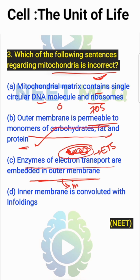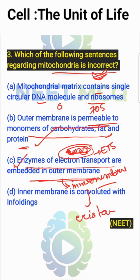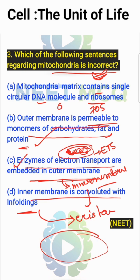The enzymes of the electron transport system of respiration — are they embedded in the outer membrane? No. They are present in the inner membrane of mitochondria, that is the cristae. So the incorrect statement is option C. The inner membrane is convoluted with infoldings known as cristae. If the outer membrane is on the outside, the inner membrane has infoldings like this.